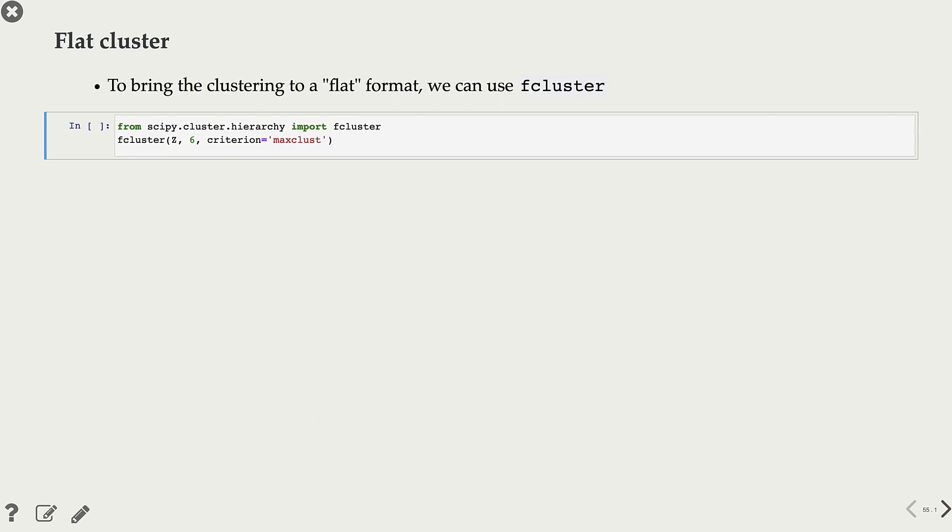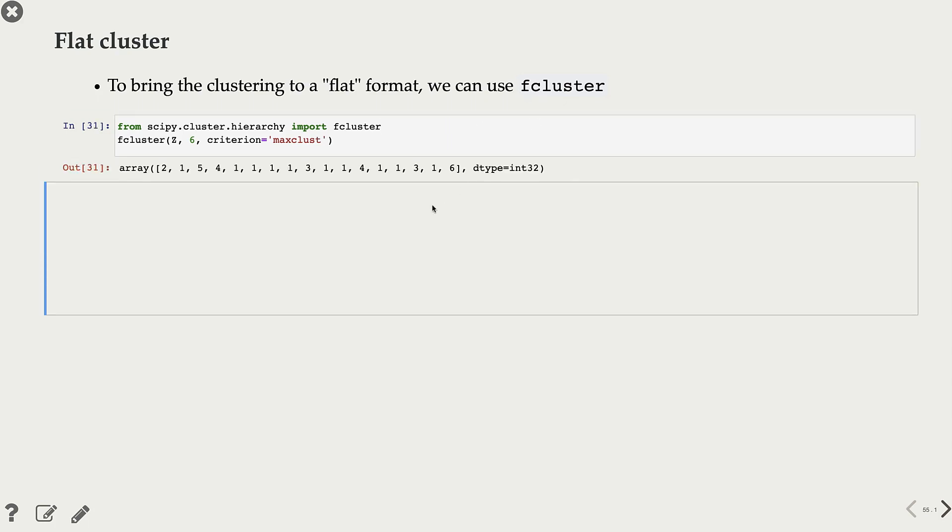Finally, if you want to look at cluster assignments at a particular level, you can use this FCluster method. So here I'm showing you cluster assignments for our 17 different countries at a particular level in our dendrogram. That's all about hierarchical clustering.